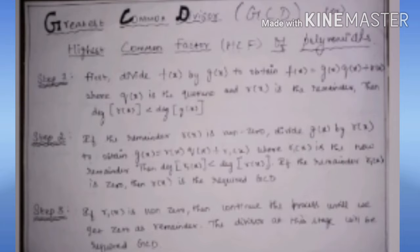By degree, they mean the highest degree of the coefficient — that is, the power of the expression. Whatever quadratic expression they are giving, the highest power you have to see; that is called the degree. Step 2: if the remainder R(X) is non-zero, divide G(X) by R(X) to obtain G(X) = R(X) × Q(X) + R1(X). If R(X) is non-zero, you have to divide it once again to get R1(X).